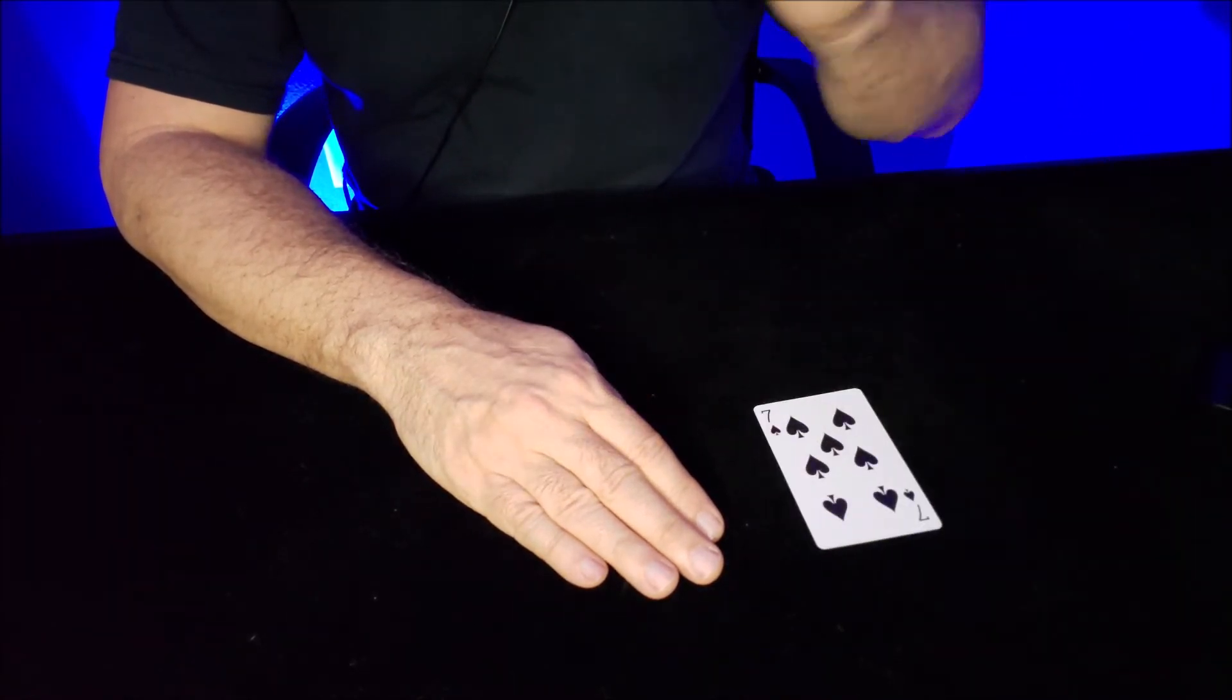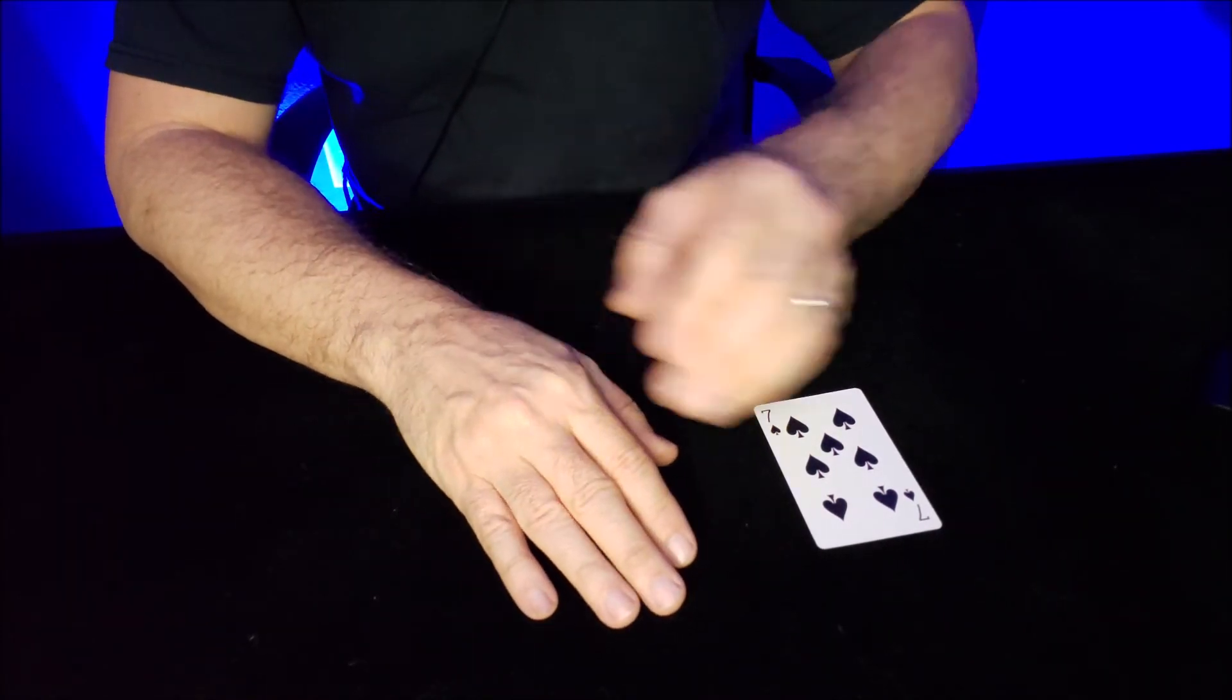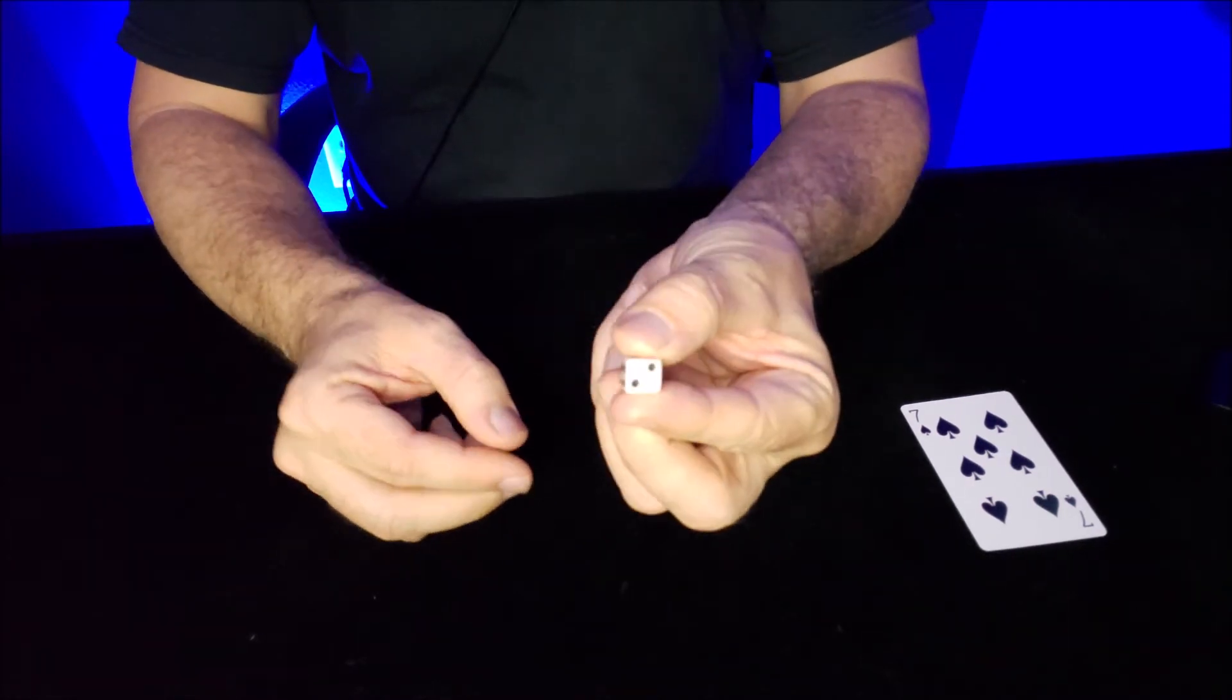You say, 'This is my prediction - I think your number is seven.' They're gonna be like, 'What?!' The great thing is, it works every single time. You don't have to do anything. If they roll a two...